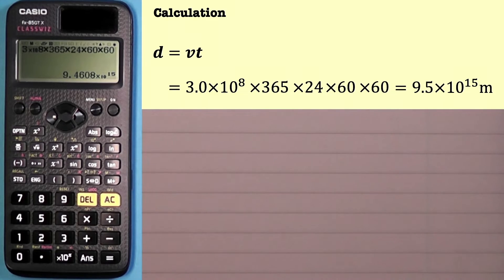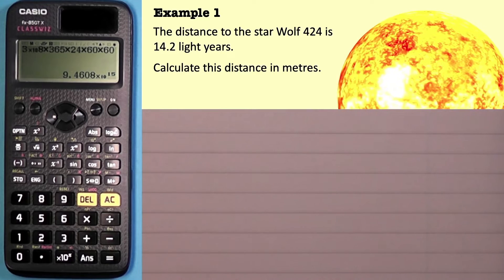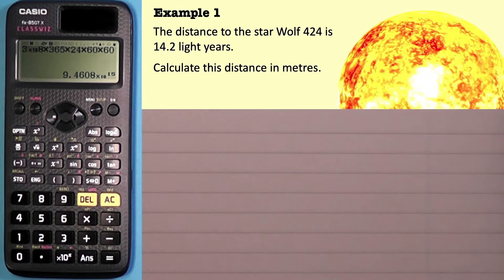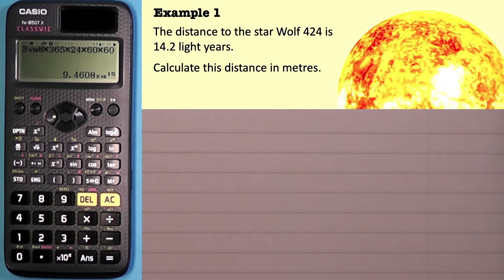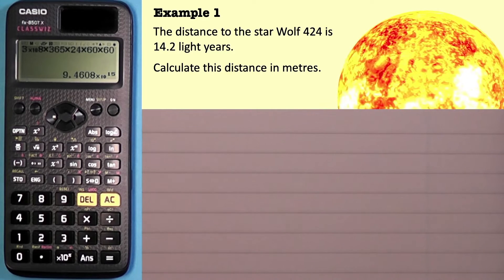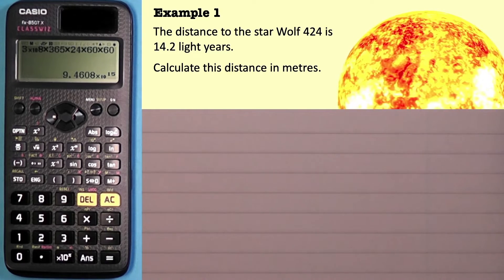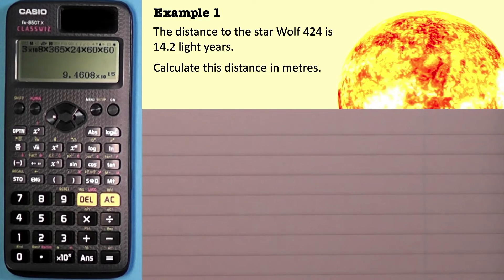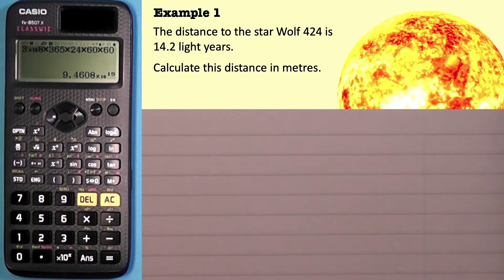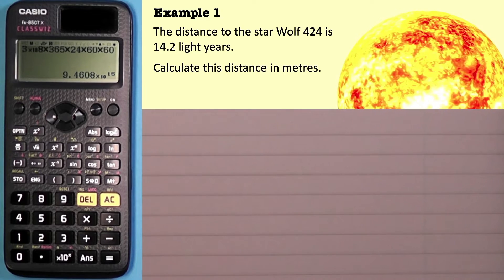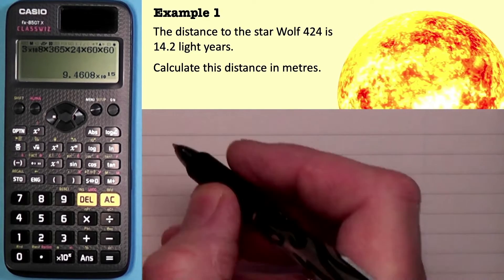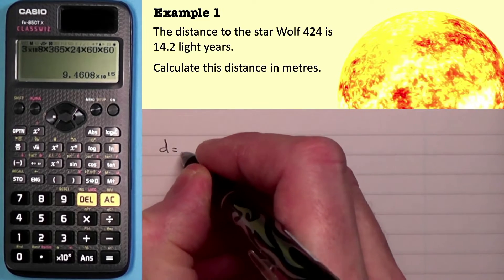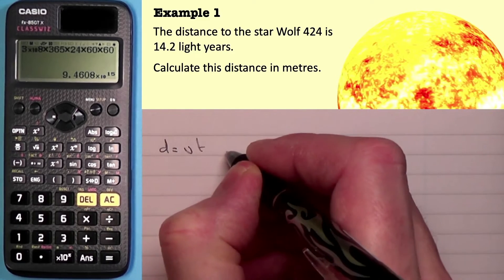Let's look at example number one. The distance to the star Wolf 424 is 14.2 light years — calculate this distance in meters. It is a calculate question, but we'll treat it like a show question. For calculate questions we should really be following the same stages — writing an equation anyway. So the equation is D equals V times T.